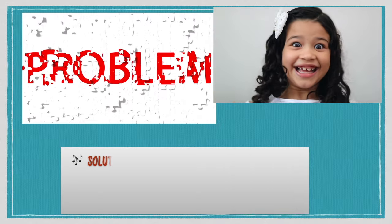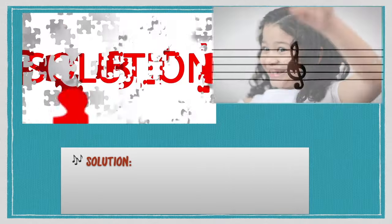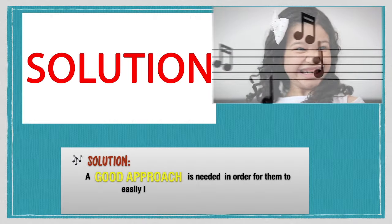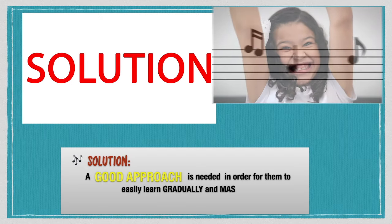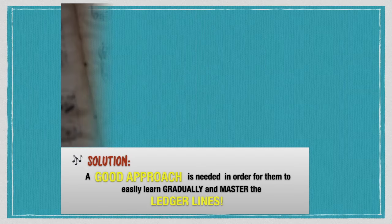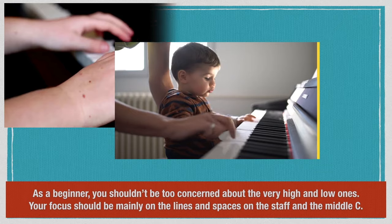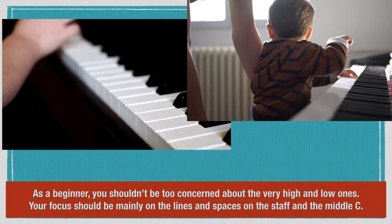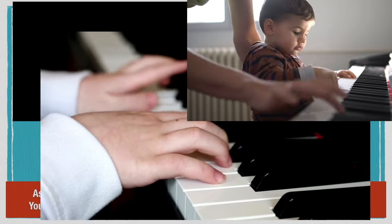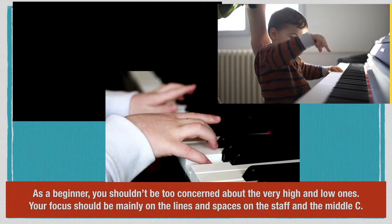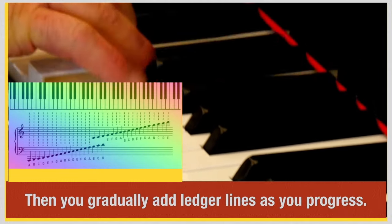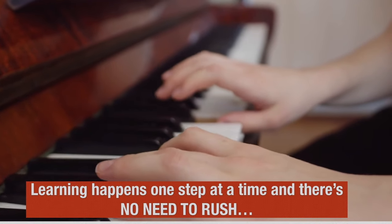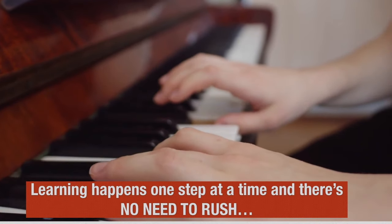The solution for this problem is that a good approach is needed for students to gradually learn and master the ledger lines. As a beginner, you shouldn't be too concerned about the very high and low ones. Your focus should be mainly on the lines and spaces on the staff and the middle C. Then, gradually add ledger lines as you progress. Learning happens one step at a time and there's no need to rush.